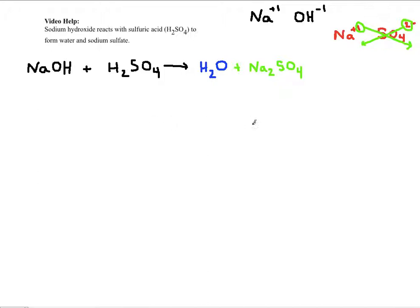If, for example, I had aluminum and sulfate, aluminum has a three plus charge, sulfate has a two minus.